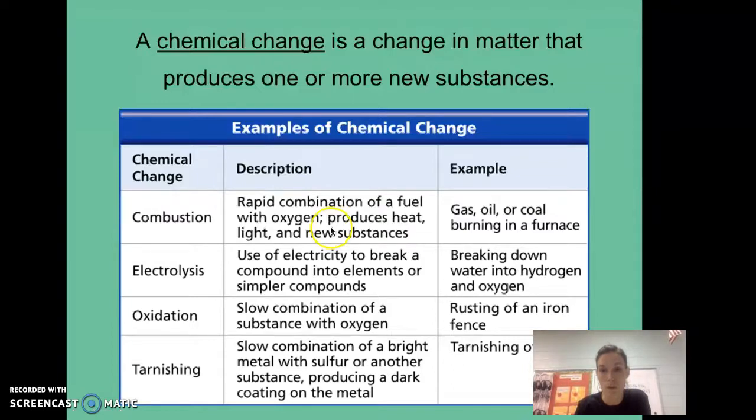Something like gas, oil, or coal are substances that are combustible. Electrolysis is really important, and that's using electricity, so same root word here. It breaks the compound into elements or simpler compounds. For instance, water is broken into hydrogen and oxygen, so we can break down that compound into hydrogen and oxygen.